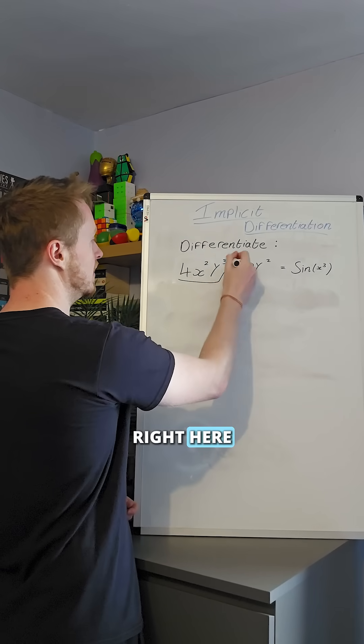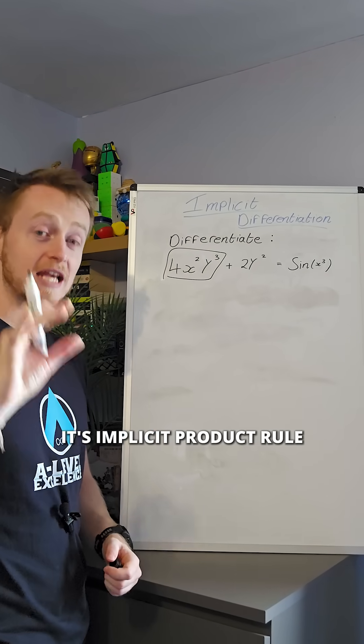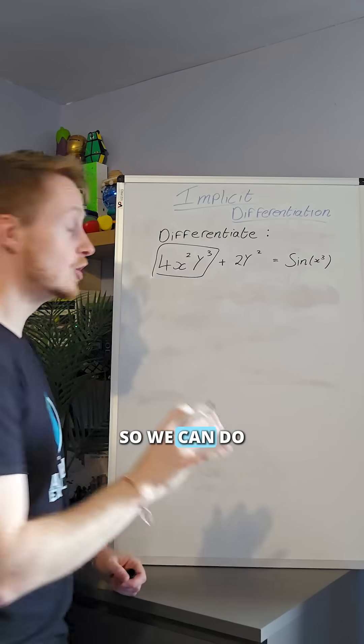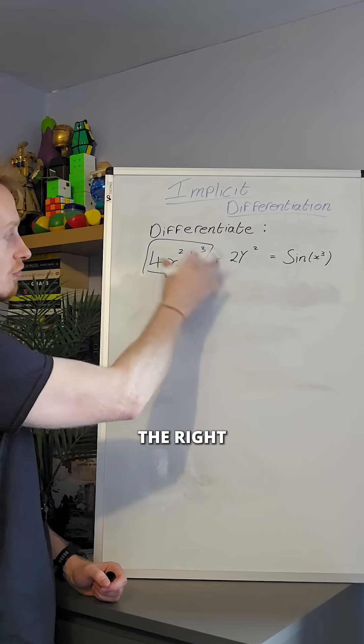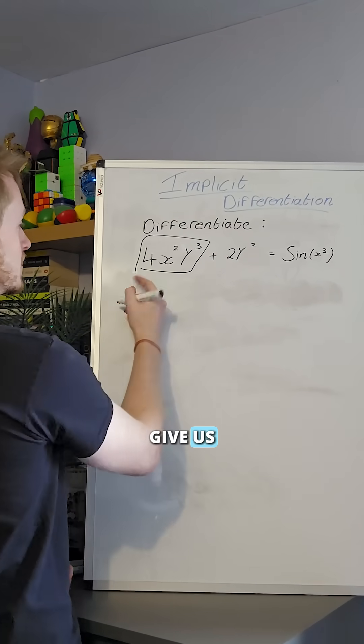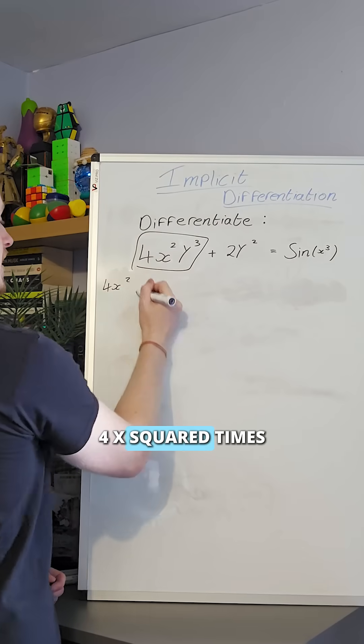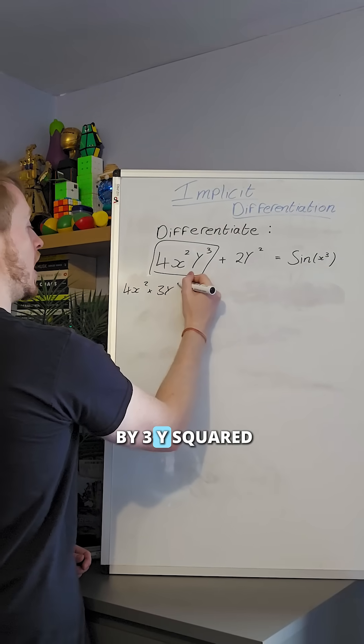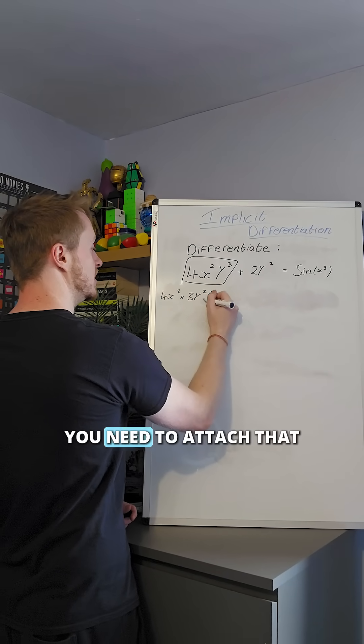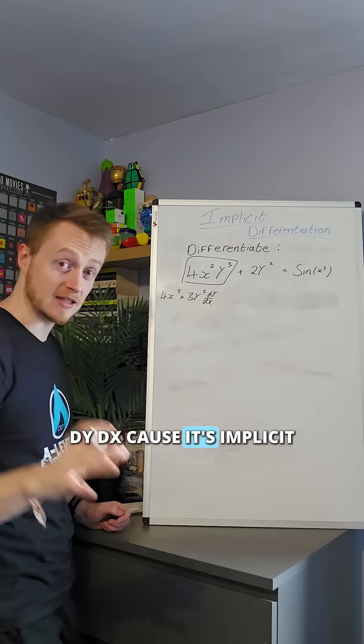This expression right here, you need to recognize its implicit product rule. So we can do that with a quick trick. Lefty right, righty left. So that is going to give us 4x squared times by 3y squared. But remember, you need to attach that dy dx because it's implicit.